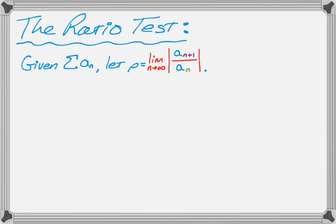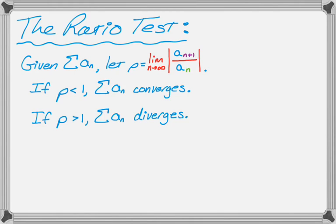There are actually three things that can happen when you calculate rho. So the first thing is rho could be less than 1. If rho is less than 1, then the series converges. If rho is greater than 1, then the series diverges. And then the third option is that rho is actually equal to 1, in which case the test is inconclusive, and you have to try a different test.